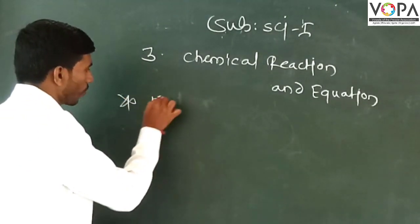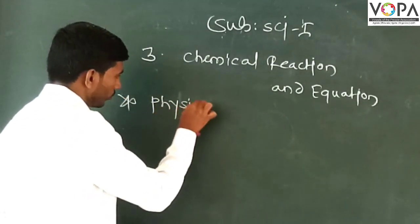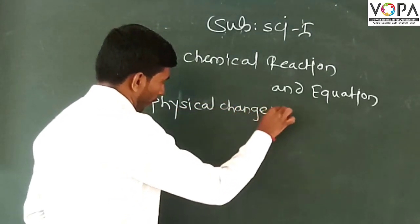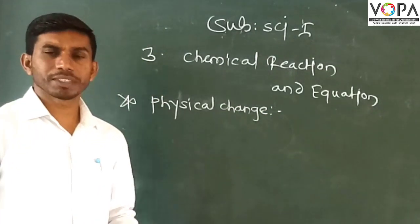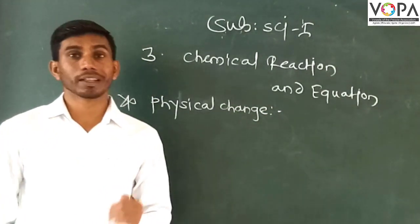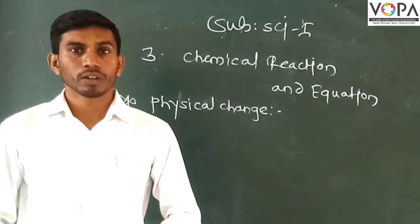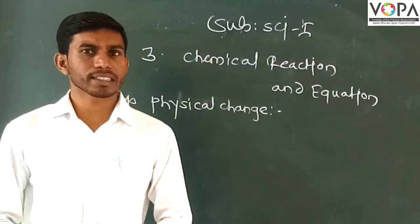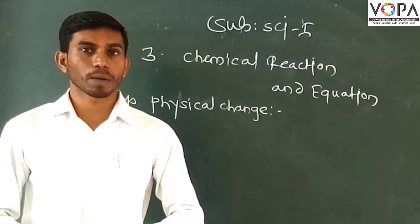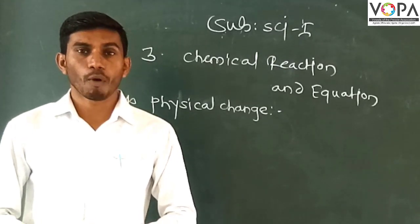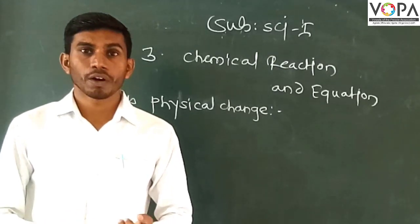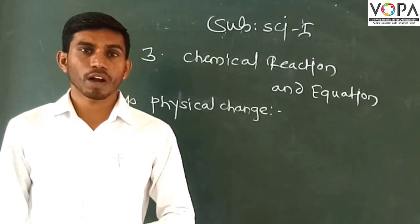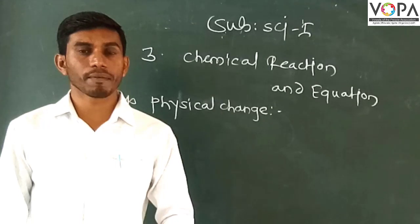Let's discuss physical change. Physical change is very different. One substance is identified — we have identified the same. Physical property is identified. For example: state, order, shape, size, color, etc. We have identified the same.